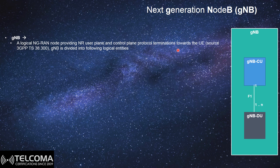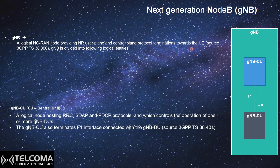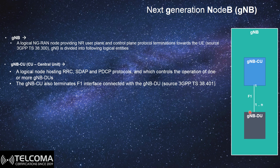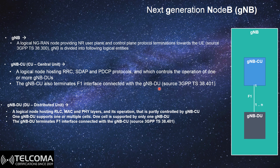The gNodeB is becoming a logical NG-RAN node providing new radio user plane and control plane termination towards the UE. The Central Unit focuses on upper layers — the RRC layer in the control plane, and the SDAP and PDCP protocols on the user plane. SDAP is a new protocol in the standalone network. The SDAP and PDCP protocols, which are upper-layer protocols, are the responsibility of the Central Unit, which controls the operation of one or more Distributed Units. The gNodeB Central Unit also terminates all F1 interfaces connected to the Distributed Units, as per 3GPP 38.401.